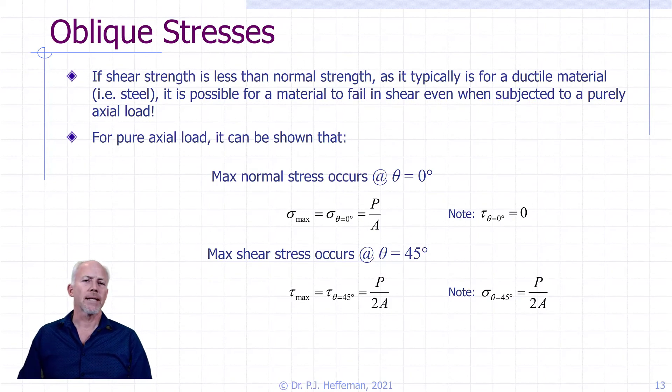So what does that mean to us? Well, if shear strength is less than normal strength of a particular material - and that's fairly common for ductile materials like mild steel - it is possible for the material to fail in shear, even though it is subjected purely to an axial load, because at some other angle of orientation, there is a shear stress occurring. So it behooves us to look and see what that shear stress might be, ideally figure out where it is a maximum and what it is when it is a maximum, and make sure that that's below the capacity of the material to support it.